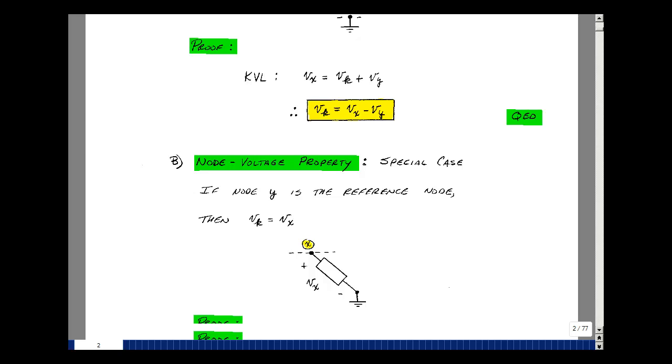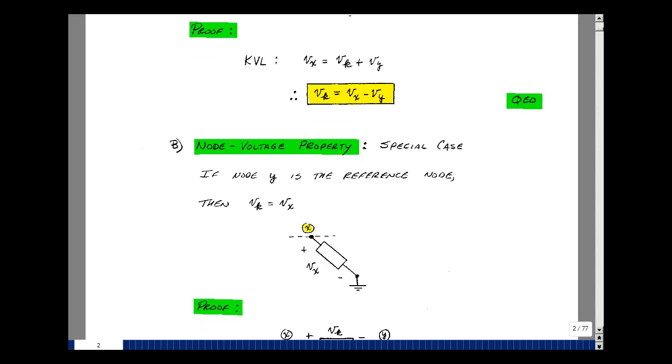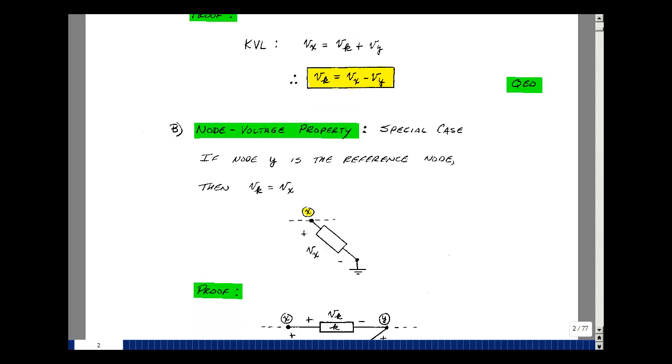There's also one other case and that is when one of the nodes is also the reference node. In that case the voltage across the kth element is the node voltage, in this case we'll call it v sub x.